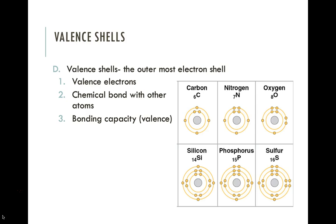If you look at carbon, it has four unpaired electrons, which means carbon is willing to form up to four bonds. In fact, carbon often forms four bonds if it has any unpaired electrons — it likes to grab a hydrogen. Those bonds can be either single, double, or triple bonds, depending on the atom and how many valence electrons are available.